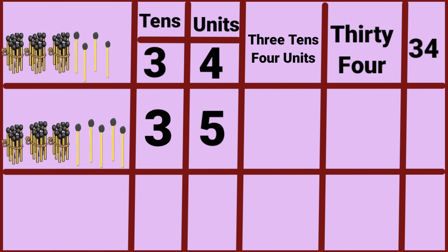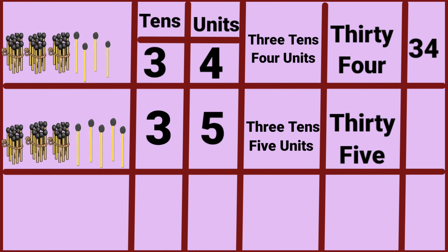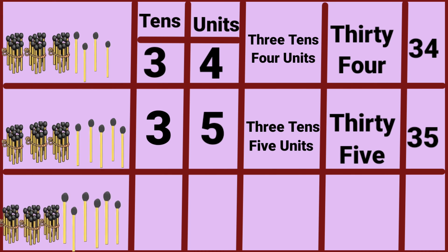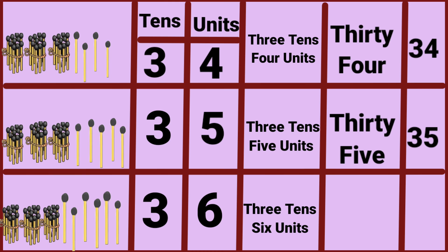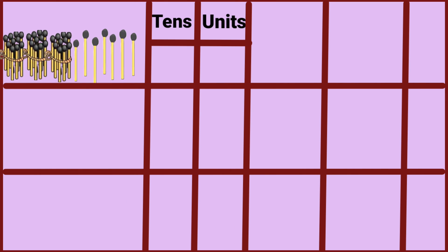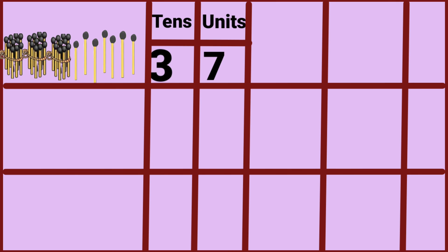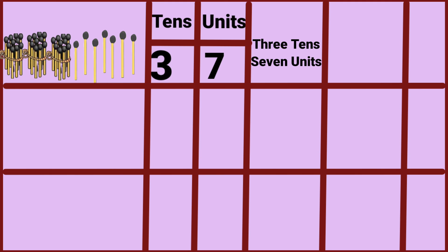Three tens, five units — thirty-five. Three tens, six units — thirty-six. Three tens, seven units — thirty-seven.